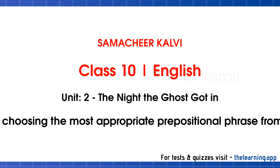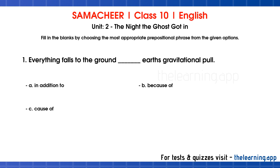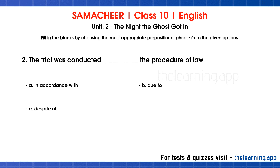Fill in the blanks by choosing the most appropriate prepositional phrase from the given options. Question 1: Everything falls to the ground — earth's gravitational pull. Options are: a. In addition to, b. Because of, c. Cause of. Correct answer is b. Because of.